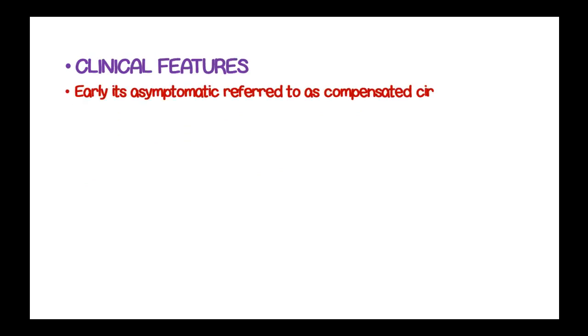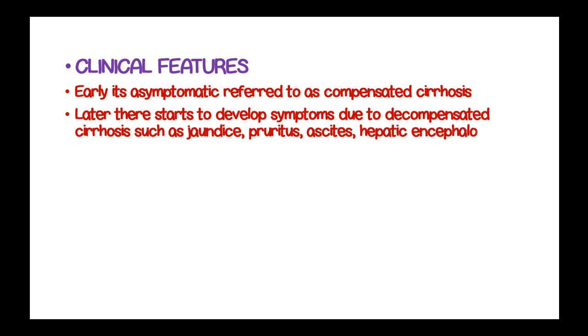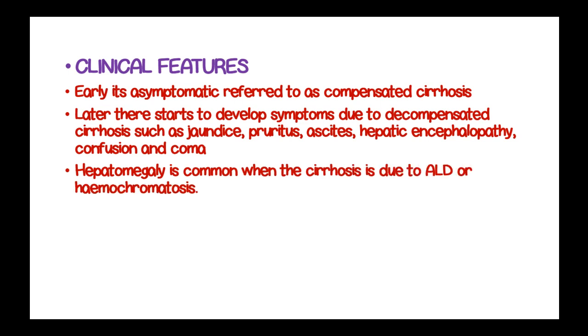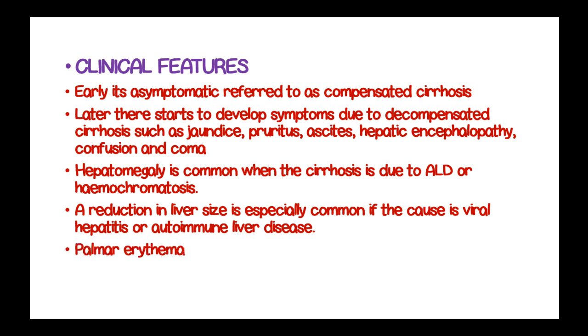Clinical features of liver cirrhosis include an early asymptomatic state known as compensated cirrhosis. Later, symptoms develop due to decompensated liver function — known as decompensated cirrhosis — including jaundice, pruritus, ascites, hepatic encephalopathy, confusion, and coma. Hepatomegaly is common when cirrhosis is due to alcoholic liver disease or hemochromatosis, while a reduction in liver size is especially common when the cause is viral hepatitis or autoimmune liver disease.